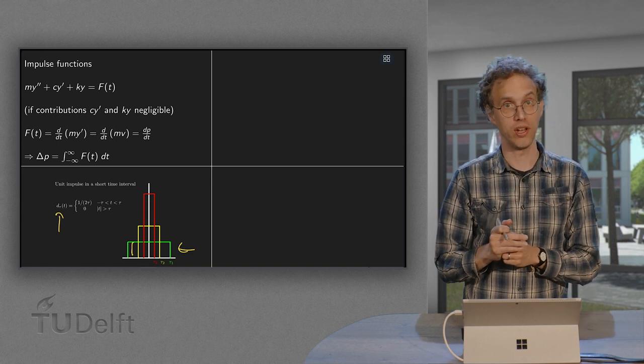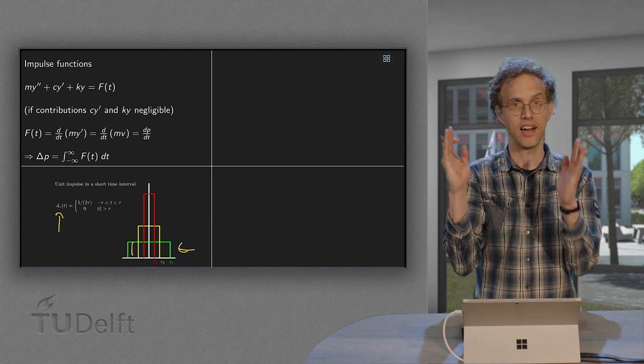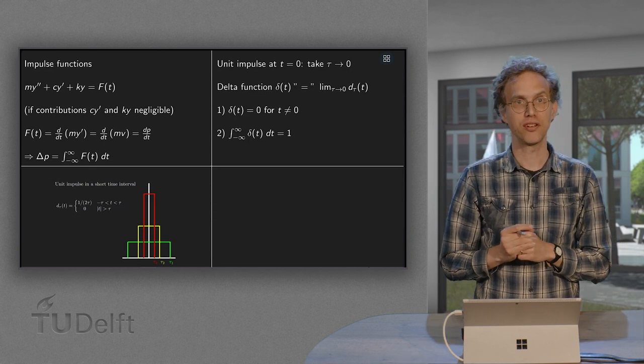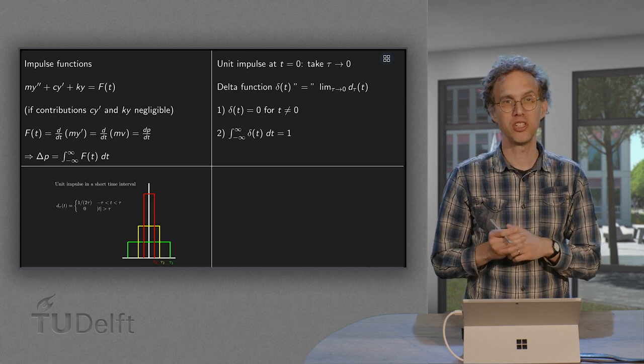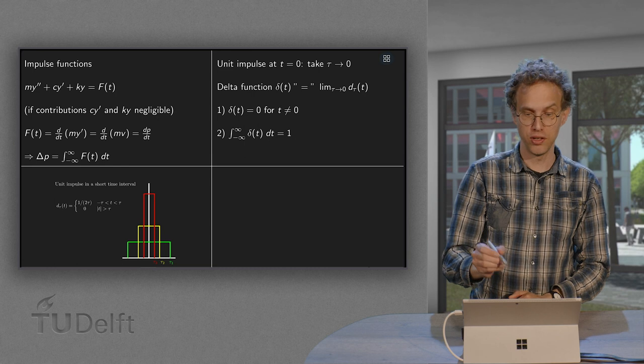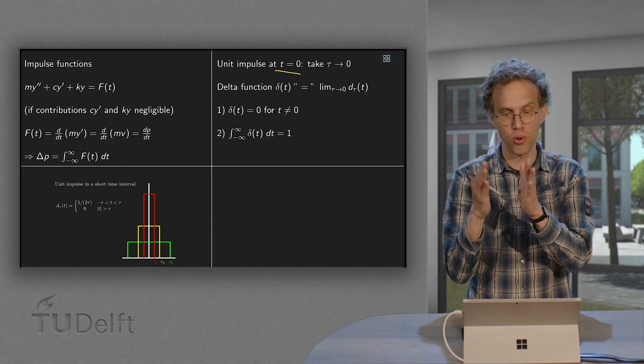And we can choose the τ even smaller, τ₃. Again we get higher and smaller. Now what is this delta function? What you basically do is you say your τ is very, very small. So if you want to give a unit impulse at t equals zero, you basically take τ to zero.